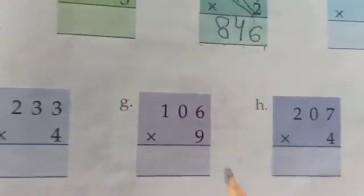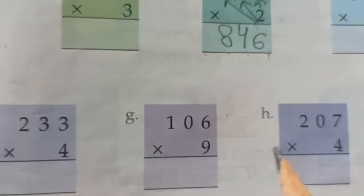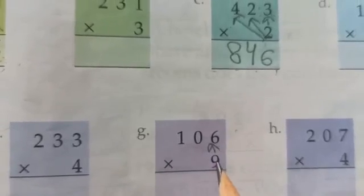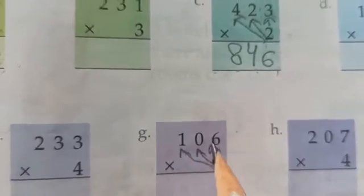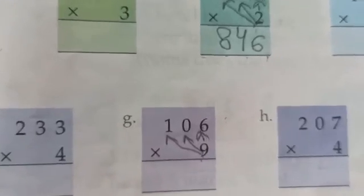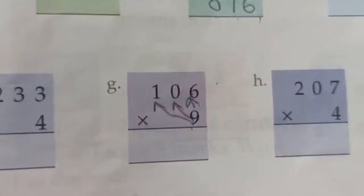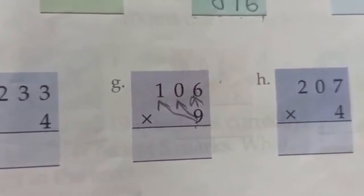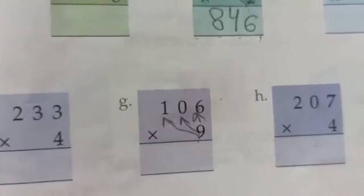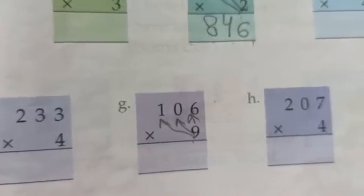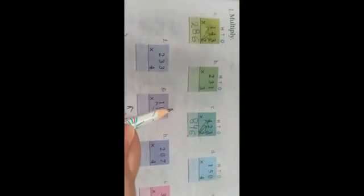Now we will multiply 106 by 9. First of all we will start from the 1s place and multiply 9 by 6, then 9 by 0, and 9 by 1. We will speak the table of 9 six times: 9 ones are 9, 9 twos are 18, 9 threes are 27, 9 fours are 36, 9 fives are 45, 9 sixes are 54. So we will not write 54 directly. We will write 4 here and carry forward 5 to the 10s place.